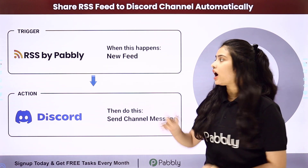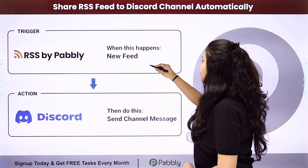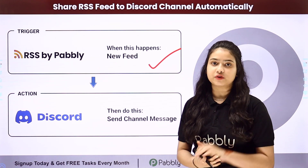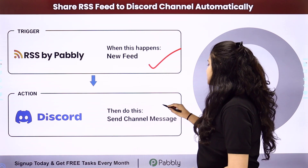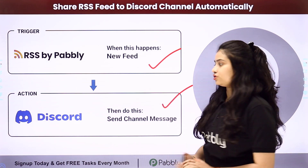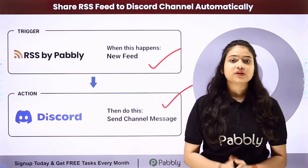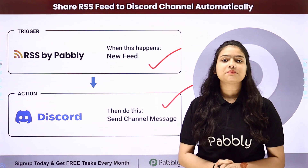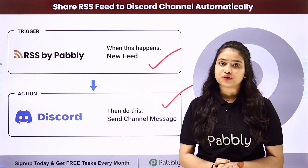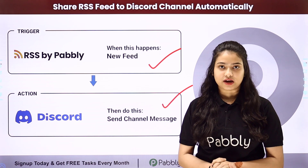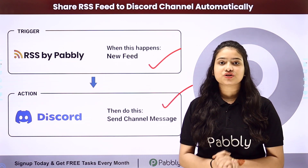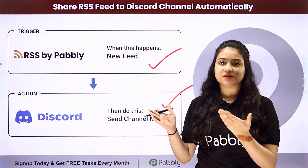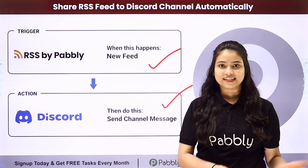Here we have RSS by Pabbly through which we are going to connect any RSS website with Pabbly Connect, and then we have Discord in our action. So we are going to connect both of them by using Pabbly Connect in order to automate this entire process. To learn this entire automation step by step, let me take you all to my screen.